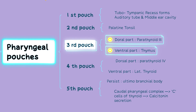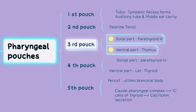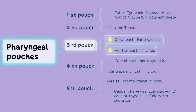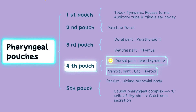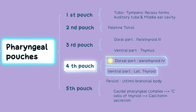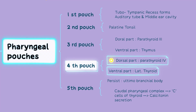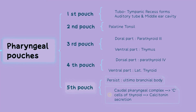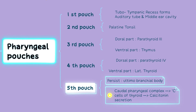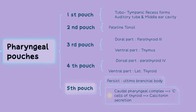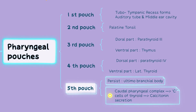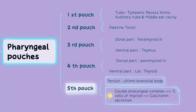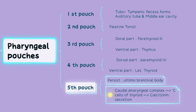The third pharyngeal pouch: the dorsal part gives rise to the parathyroid glands, while the ventral part gives rise to the thymus gland. The fourth pharyngeal pouch: the dorsal part gives rise to parathyroid 4 and the ventral part contributes to the formation of the lateral thyroid lobes. The fifth pharyngeal pouch: the dorsal part gives rise to the ultimobranchial body, which fuses with the thyroid gland. The ultimobranchial body, or C cells of the thyroid gland, secretes the hormone calcitonin.